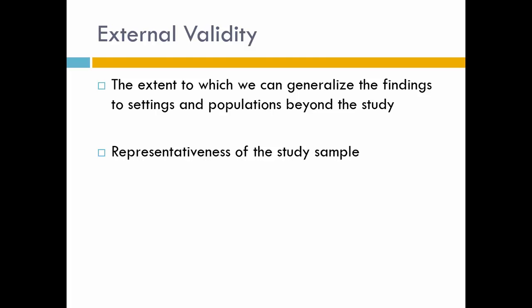To recap: internal validity has to do with your study design, those three criteria, and the seven threats. If all are met, you have high internal validity and can say with more confidence that variable A predicts variable B. If not, you have low internal validity and low confidence. External validity has to do with applying the results of your study to a group outside your study — think 'outside.' It depends on whether you used random or non-random sampling.